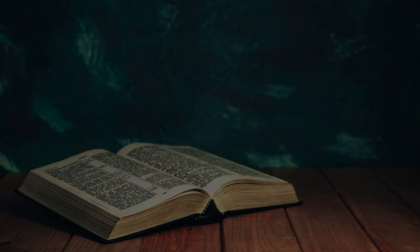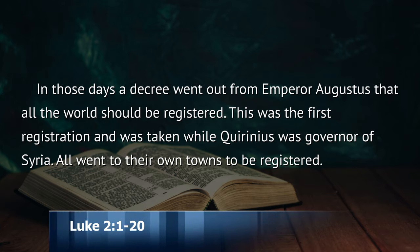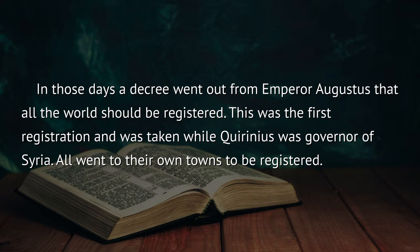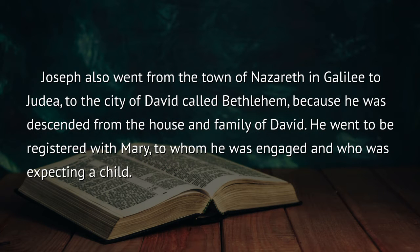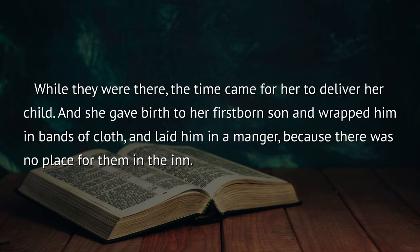Listen to the story of Jesus' birth. In those days, a decree went out from Emperor Augustus that all the world should be registered. This was the first registration and was taken while Quirinius was governor of Syria. All went to their own towns to be registered. Joseph also went from the town of Nazareth in Galilee to Judea, to the city of David, called Bethlehem, because he was a descendant from the house and family of David. He went to be registered with Mary, to whom he was engaged and who was expecting a child. While they were there, the time came for her to deliver her child. And she gave birth to her firstborn son, and wrapped him in bands of cloth, and laid him in a manger, because there was no place for them in the inn.